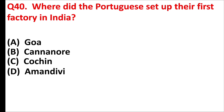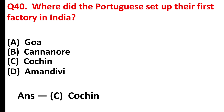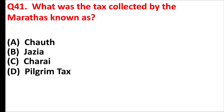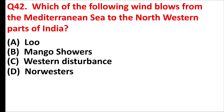Where did the Portuguese set up their first factory in India? Answer is option C: Cochin. What was the tax collected by the Marathas known as? (Answer not provided in transcript.)